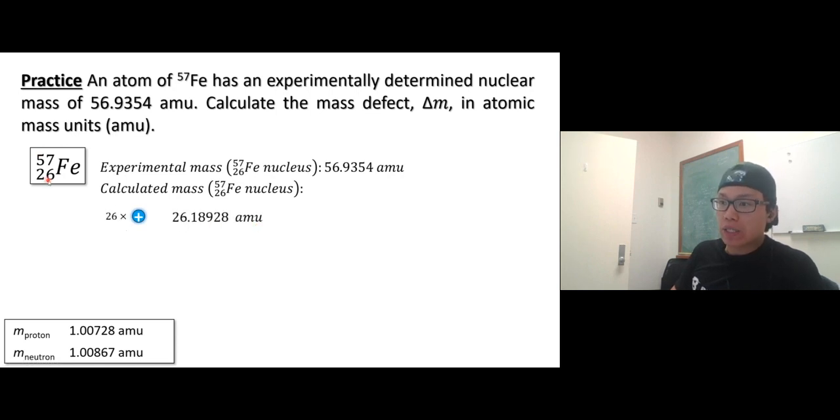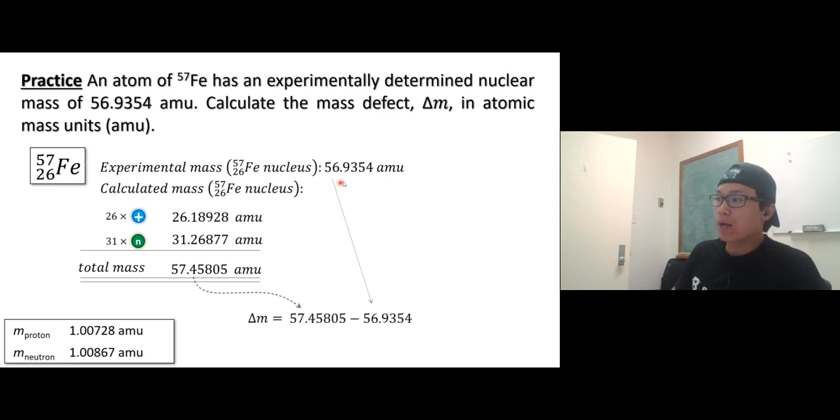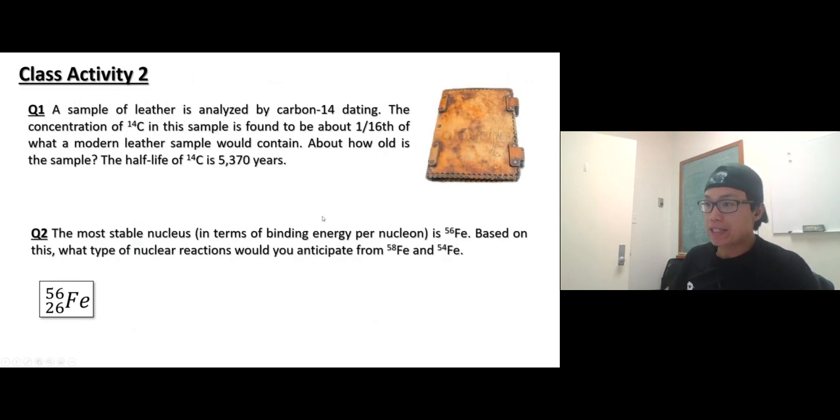And 57 minus 26, that's 31 neutrons at that amu. Total mass—so this is, in theory, what iron-57 should weigh. Mass difference is just the difference—one minus the other—and you get that number. So with significant figures, this is one, two, three, four, five; one, two, three, four. So the fourth digit after the decimal, that's the last sig fig with uncertainty. So we have one, two, three, four, so five rounds up. All right, right there, so 0.5227. Okay, that's the mass defect. All right, class activity number two, questions one and two. That's it.